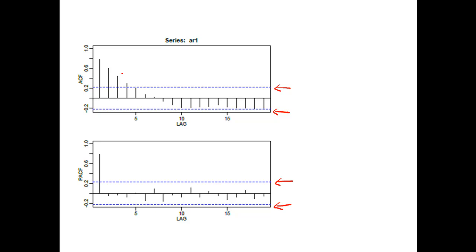For example, in the ACF chart, how many spikes are significant? We have one here, another one — the second one is also significant, the third one significant, fourth one significant. The fifth one is not significant because the vertical line is below the blue dash line. The spikes can be significant in the negative position as well. Sometimes you will see the spikes exceed the bottom horizontal dash line — in that case, we also consider that spike as a significant spike.